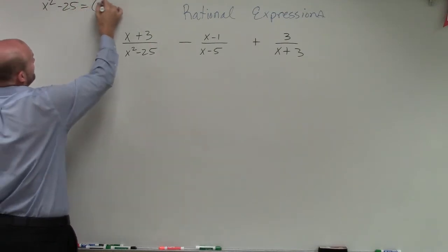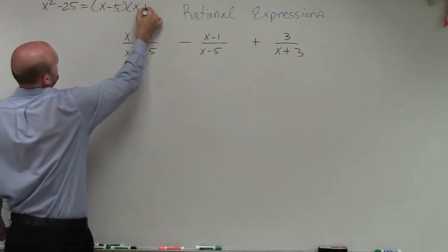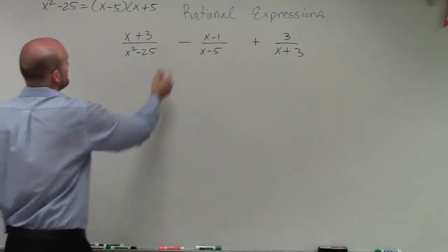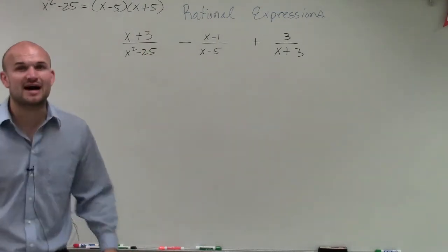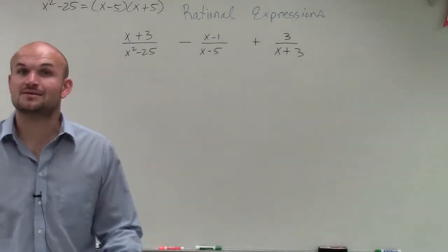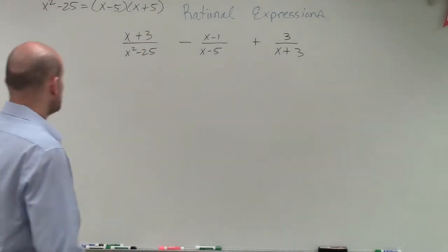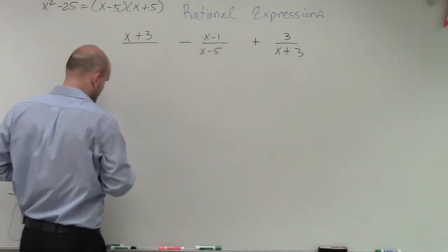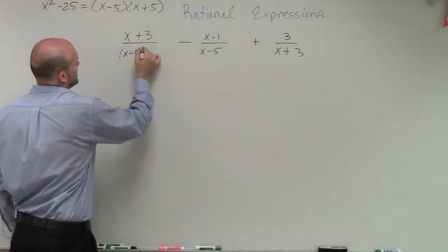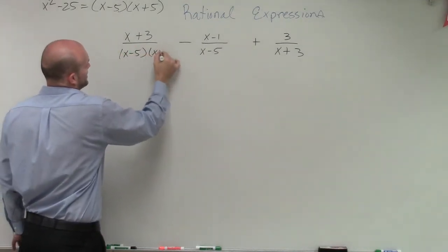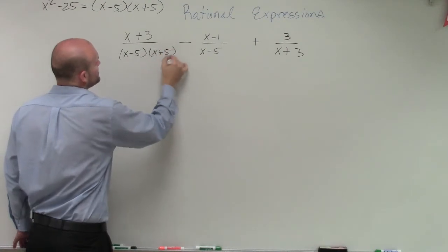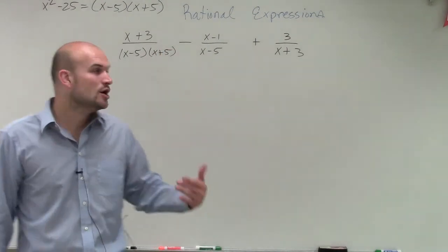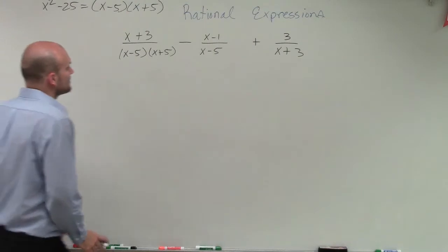Well, we know that x squared minus 25 is a difference of squares, which can be simplified into x minus 5 times x plus 5. So what I'm going to do is rewrite this as x minus 5 times x plus 5, so that I can easily see what my LCD is going to be.